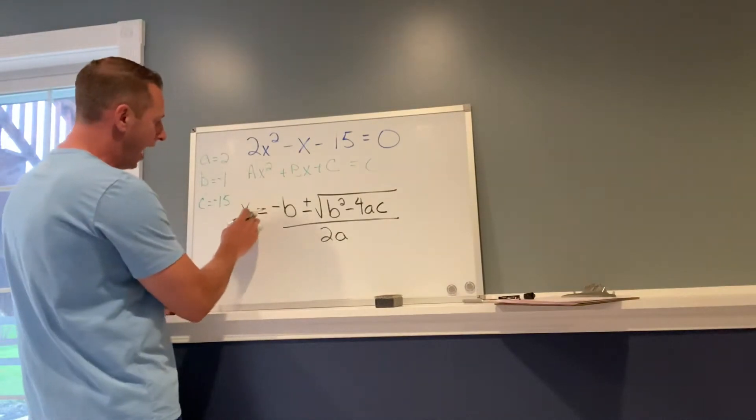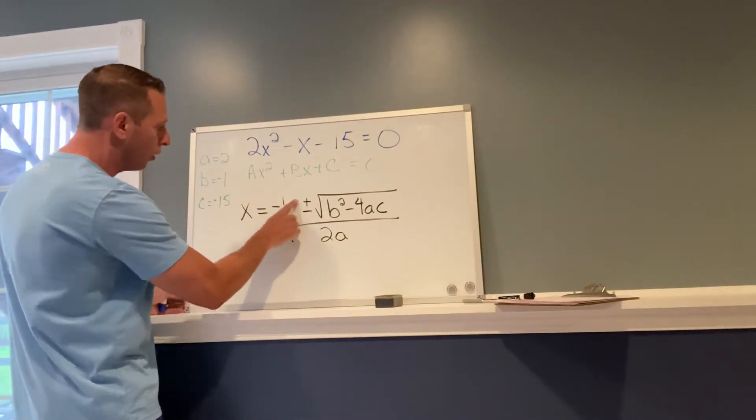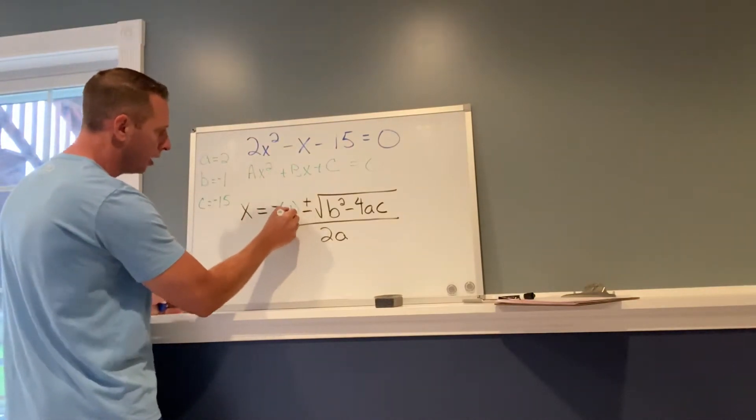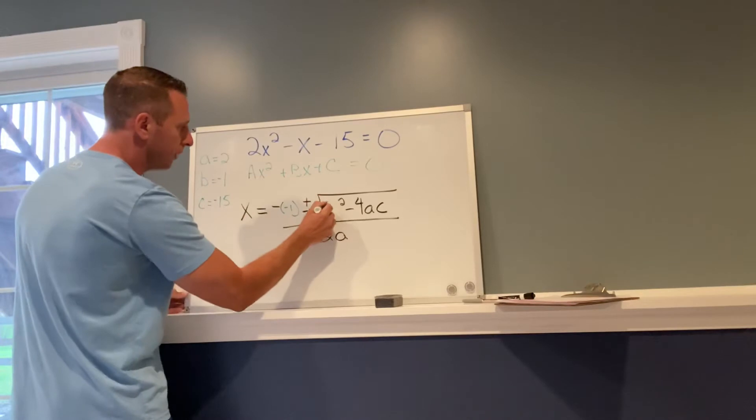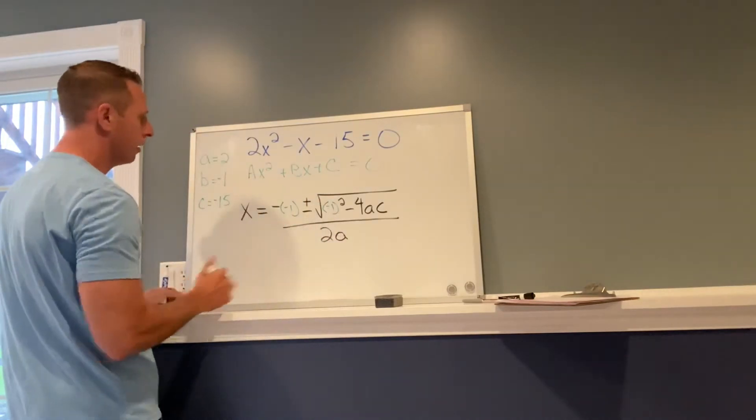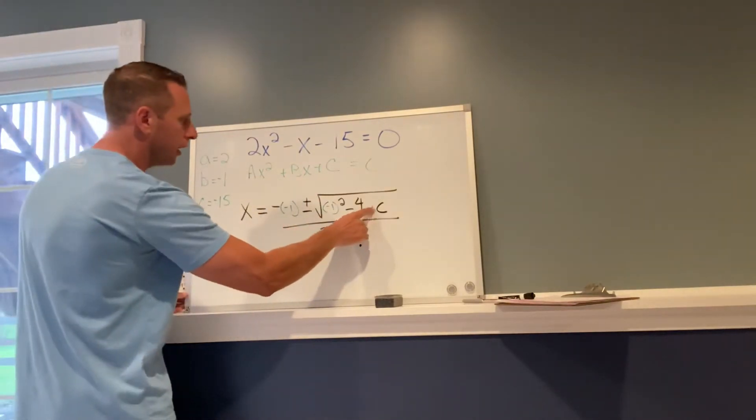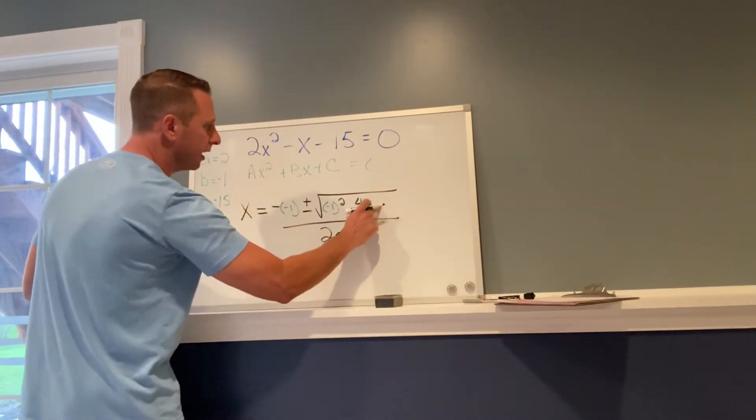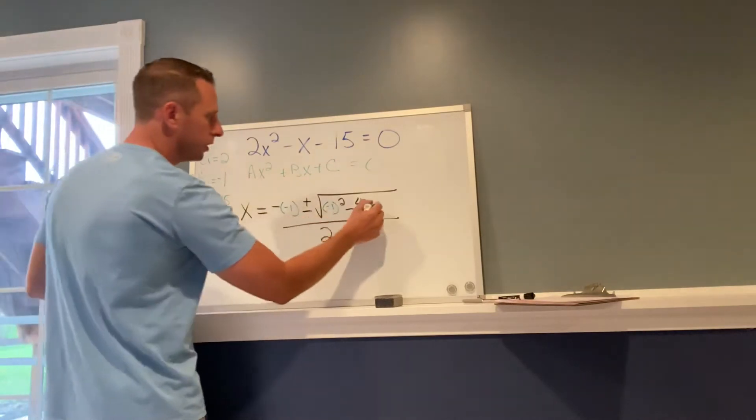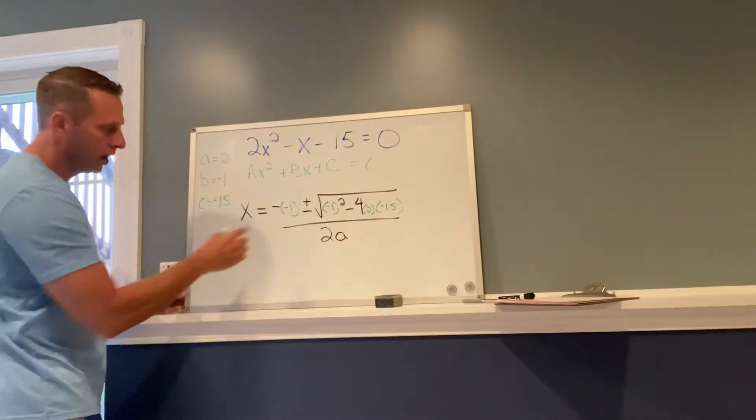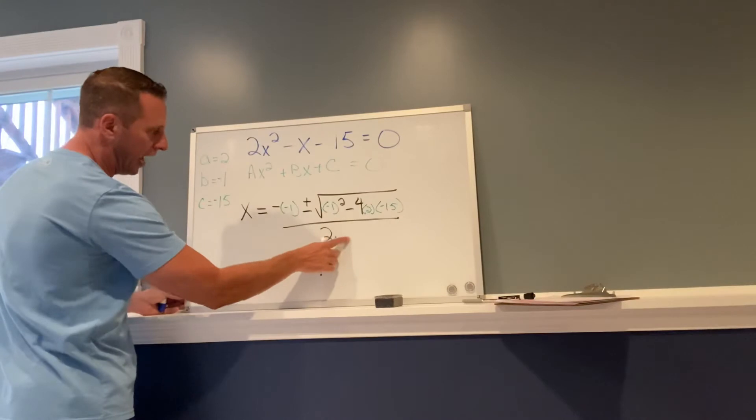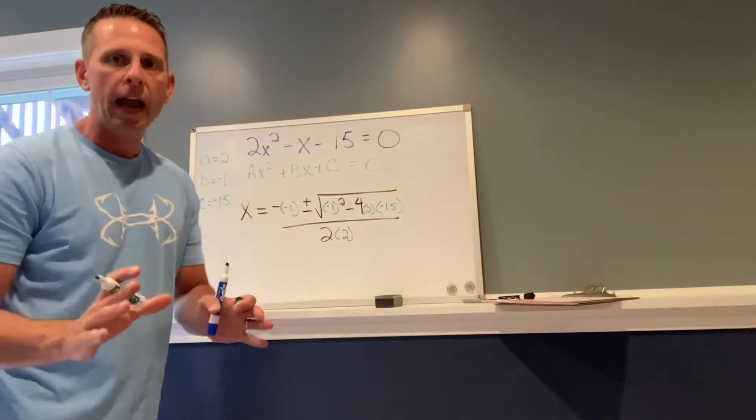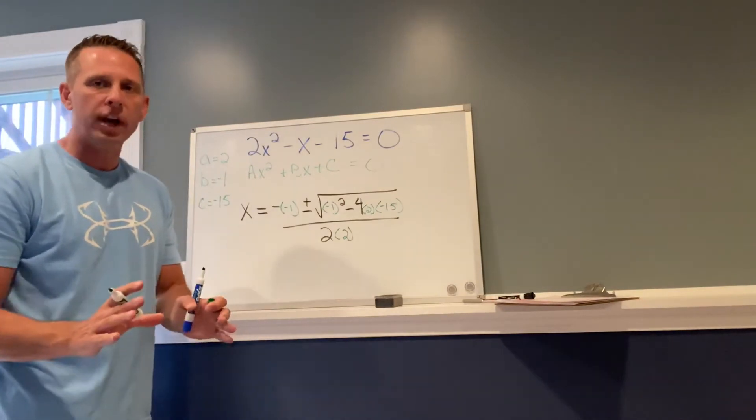x equals negative b. Instead of b we are going to substitute in negative 1. Instead of this b we're going to substitute in negative 1 minus 4, instead of a we're going to substitute in 2, and instead of c we're going to substitute in negative 15. And then right here instead of a, we're going to substitute in 2. Now it's a big order of operations problem.